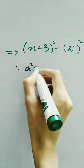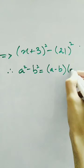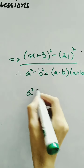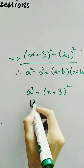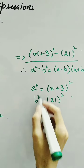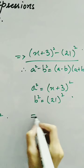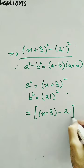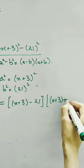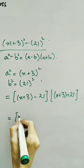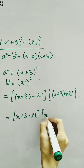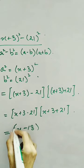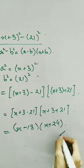Now we use the formula a squared minus b squared equals (a minus b)(a plus b) to write it in factorized form. Here a squared equals (x plus 3) whole square and b squared equals 21 squared. So we write this as (x plus 3 minus 21) and (x plus 3 plus 21), giving us x minus 18 and x plus 24 as our factors.